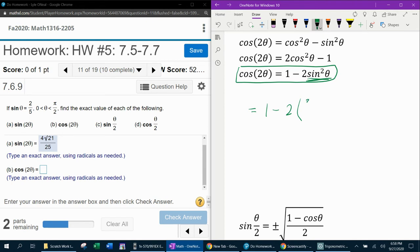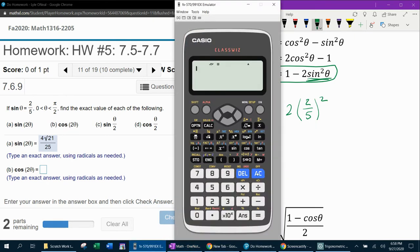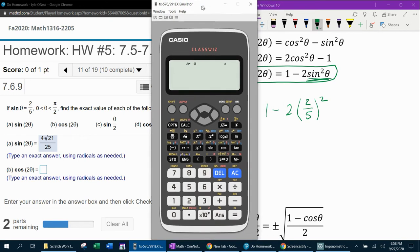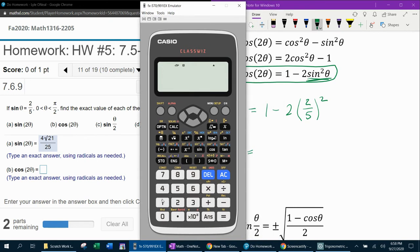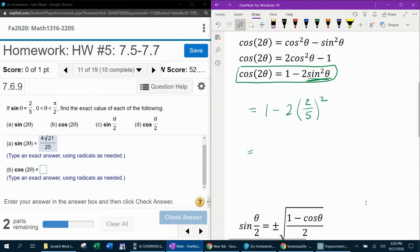And remember, sine theta was 2 fifths squared. And then I can calculate that manually, or I can calculate it electronically, which I choose to do electronically. So, that's going to be 1 minus 2 times 2 fifths squared. 17 twenty-fifths.